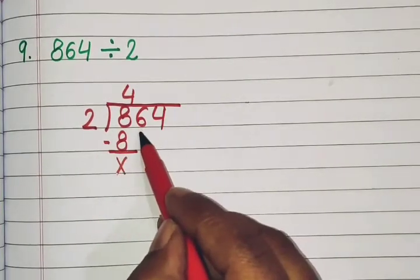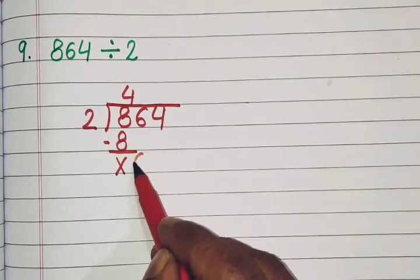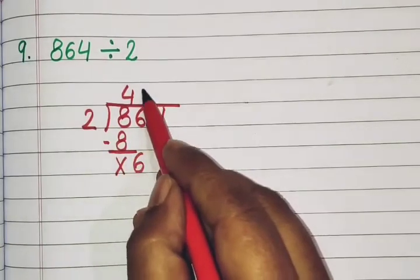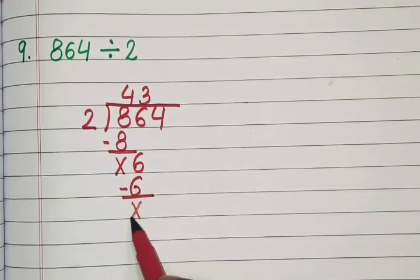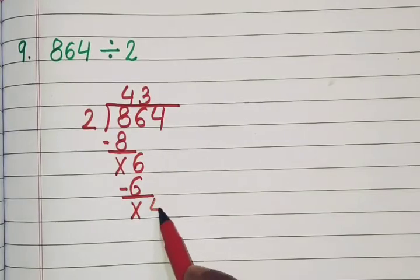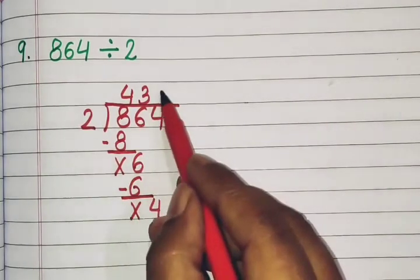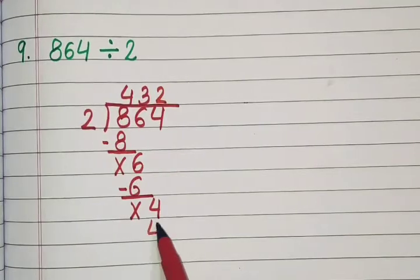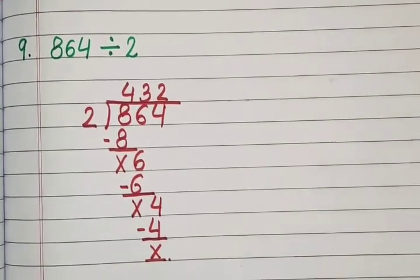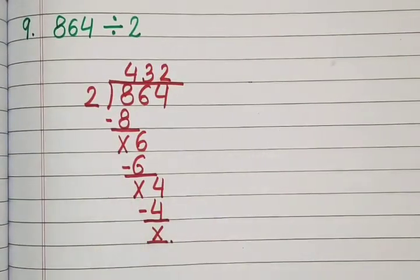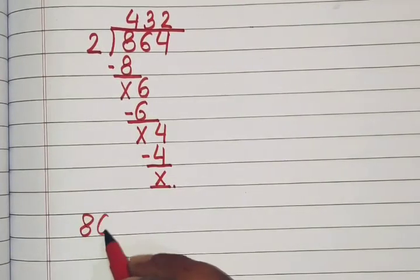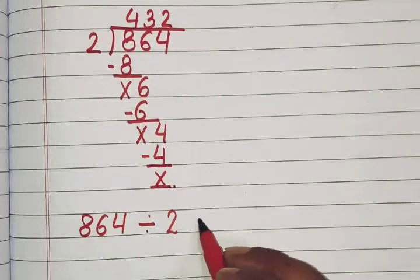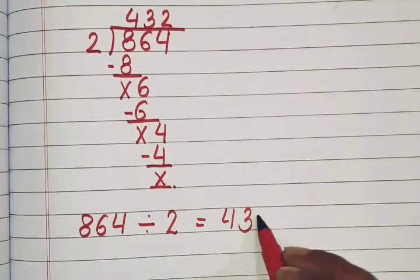After subtraction, next number: 6. 2 threes are 6. 6 minus 6 is 0, then cross. Next number: 4. 2 twos are 4. 4 minus 4 is 0, so we will cross here. There are no more numbers, so division is complete. 864 divided by 2 is equal to 432.